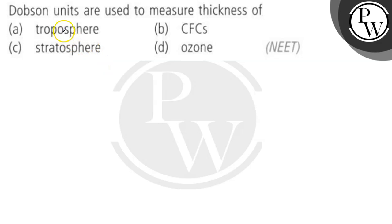Dr. Bachchan, let's read the question. Dobson units are used to measure the thickness of: troposphere, CFCs, stratosphere, or ozone.